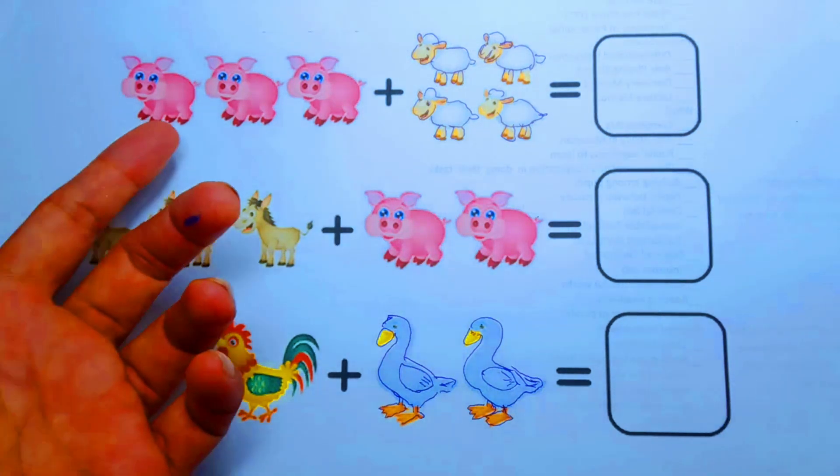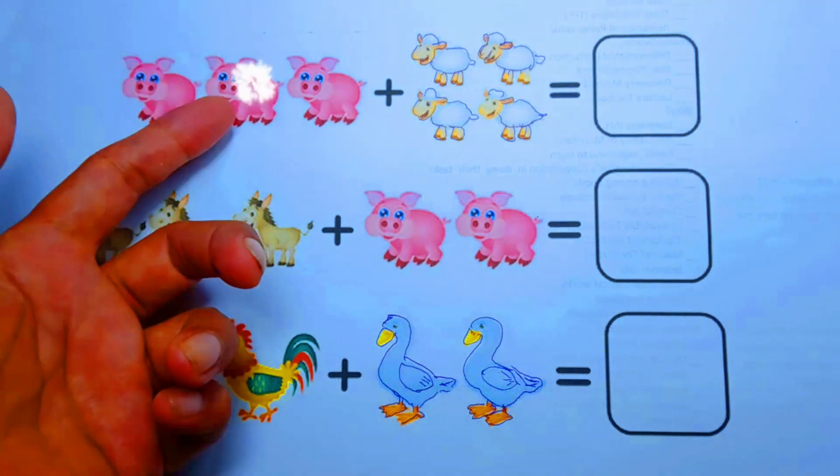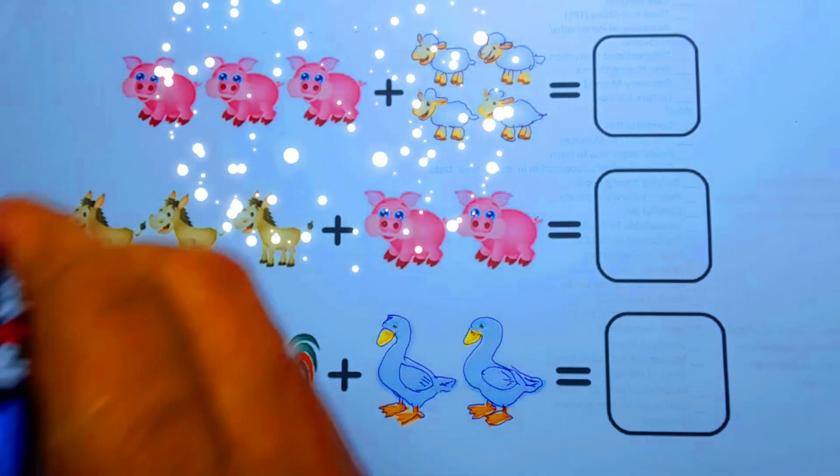In the first row, we have a group of piglets and a group of sheep. Let's count the piglets first. One, two, three. Let's write the number three.